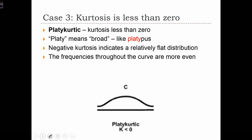The third case is when kurtosis is less than 0, or negative. Here we call this platykurtic. Platy is Greek for broad, and you can remember that because of a platypus, which has a very broad beak.